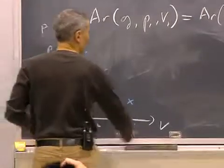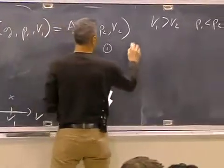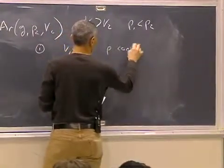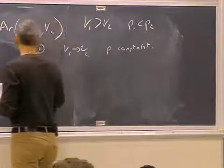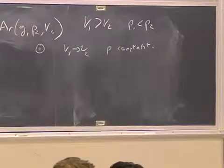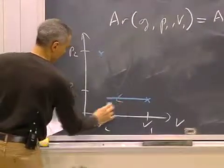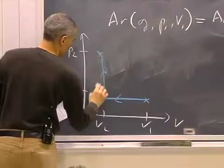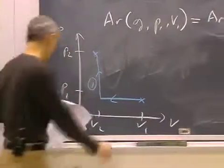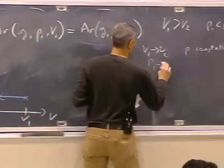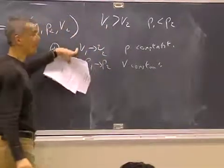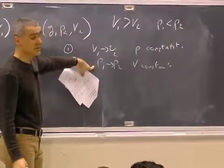So the first obvious one is to take V1 to V2 first with P constant. So I'll take this path here. I take V1 to V2 first, keeping the pressure constant at P1. Then I take P1 to P2, keeping the volume constant at V2. Let's call this path one. An isobaric process followed by a constant volume process.